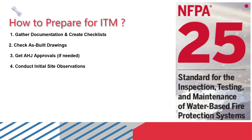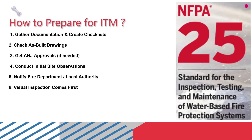Number four: conduct an initial site observation — walk around the site and get a feel for the system layout, riser rooms, valves, sprinklers, and access points. Number five: notify the fire department or local authority. This is very important — the owner must inform the fire department or local authority before starting any testing that may trigger alarms or shut systems down. You also need to coordinate with the property owner.